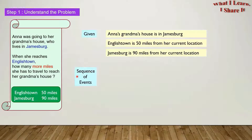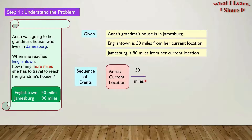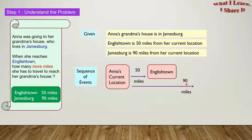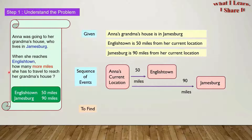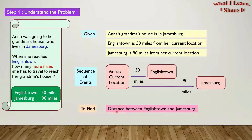So what is the sequence of events? Here is Anna's current location. Then after 50 miles, she reaches English Town. And from Anna's current location, 90 miles later, she reaches Jamesburg. So what is there to find? We have to find how many more miles she has to travel to reach her grandma's house — that is, the distance between English Town and Jamesburg.